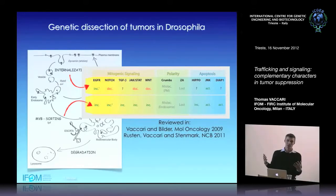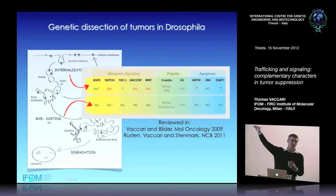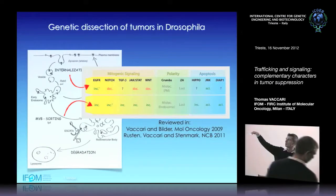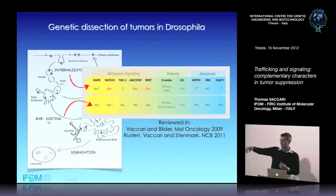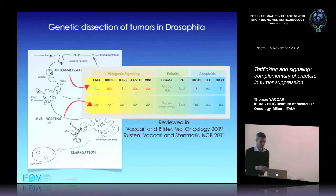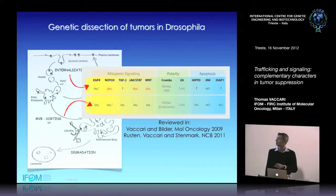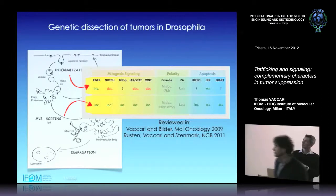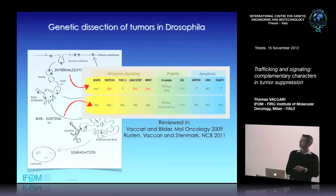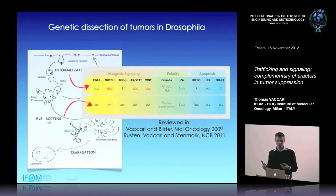We expanded this model and tested several mutants in endocytic genes. In all cases in which we blocked internalization — the entry of receptors from the membrane into the endocytic system — we had multiple alterations in mitogenic signaling and in polarity. By blocking at a different step, the sorting towards degradation, we would have another set of phenotypes, showing the endocytic structure controls signaling at multiple steps.